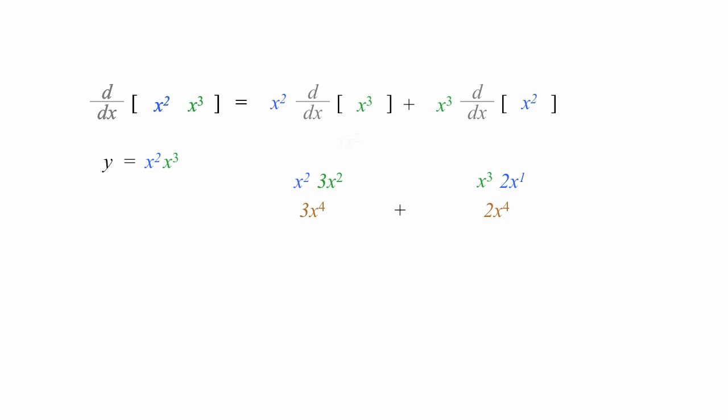So this gives me 5x to the fourth power, 5 times x to the fourth power. So the derivative of x squared times x cubed is 5 times x to the fourth power.